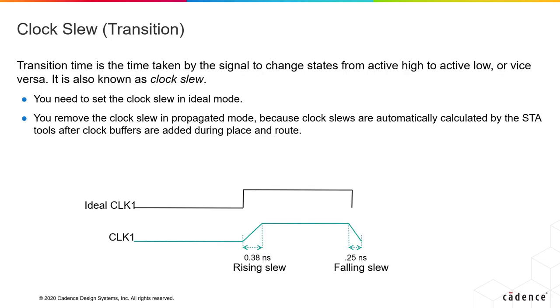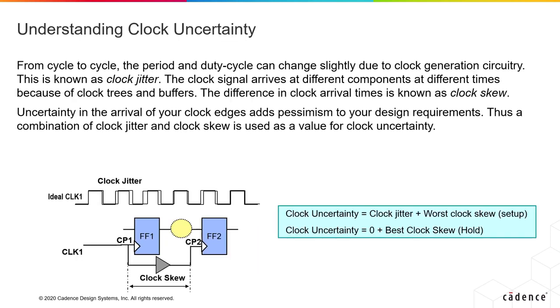As we've seen before, the transition time is the time taken by a signal to change states. In the case of a clock, this is known as the clock slew, and clock slew is essential in ideal mode. We need to define the clock slew in ideal mode because ideal clocks typically don't have any rise and fall times, it's instantaneous. Whereas once the clocks are inserted, then the STA tools will calculate the slews of the clocks through the buffers that are inserted. Because we're talking about real clocks, these clocks are generated by clock oscillators or PLLs. There is an uncertainty in the period and the duty cycle of the clock because of the circuitry that is generating these clocks. This is considered as clock jitter.